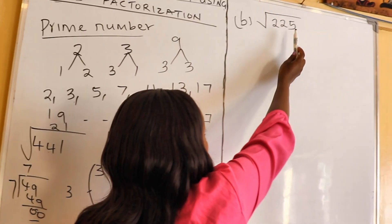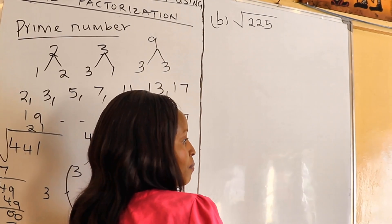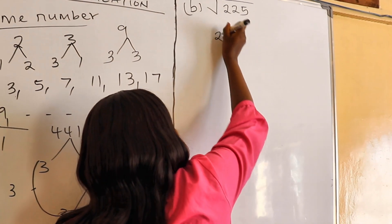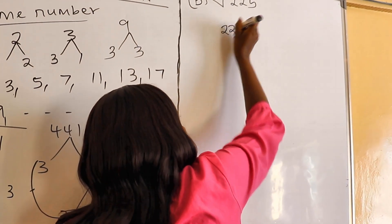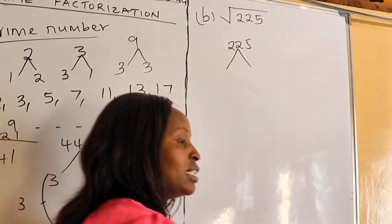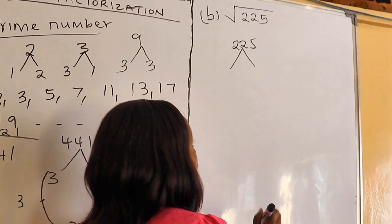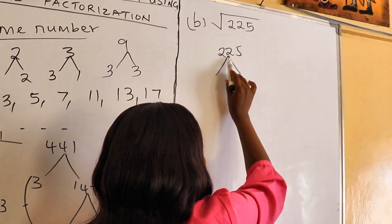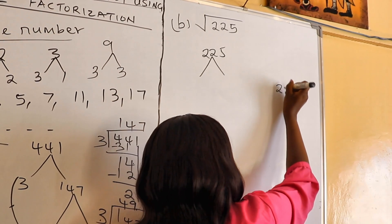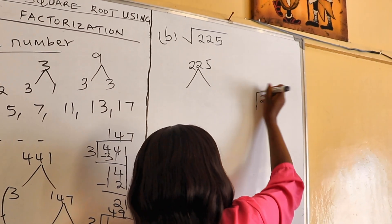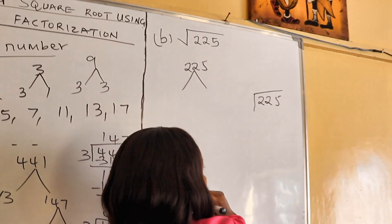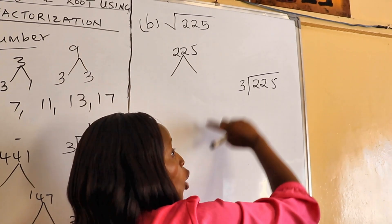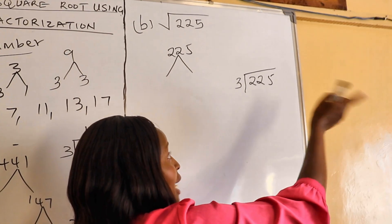Let's do our next example: find the square root of 225. Step one is to form a factor tree. After forming the factor tree, we identify the prime numbers that divide 225. We begin by checking three, since 225 is not divisible by two.